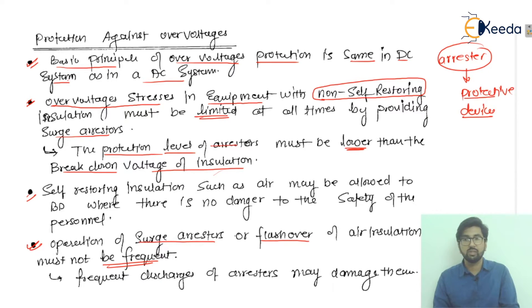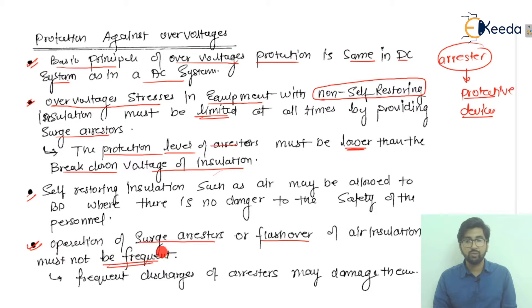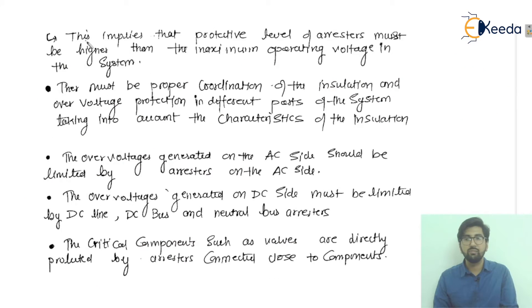The flashover of air insulation must not be frequent. Frequent discharges of the arrestors may damage the system, and this implies that the protective level of the arrestors must be higher than the maximum operating voltage in the system.